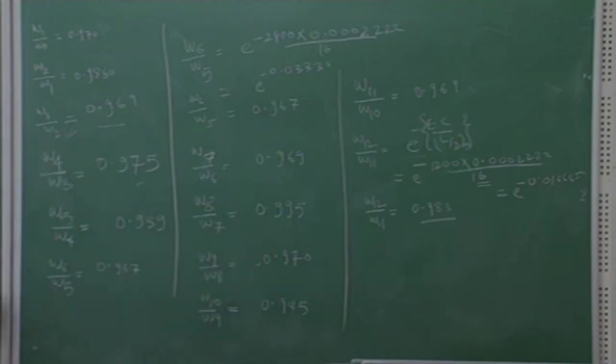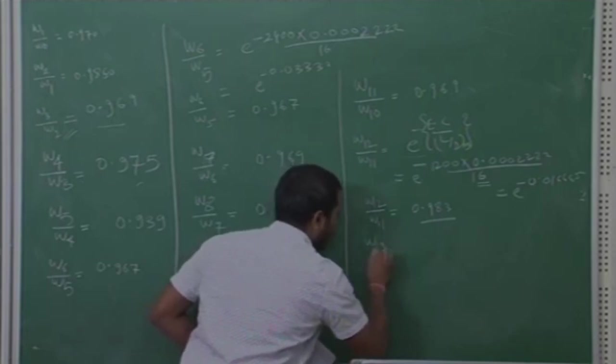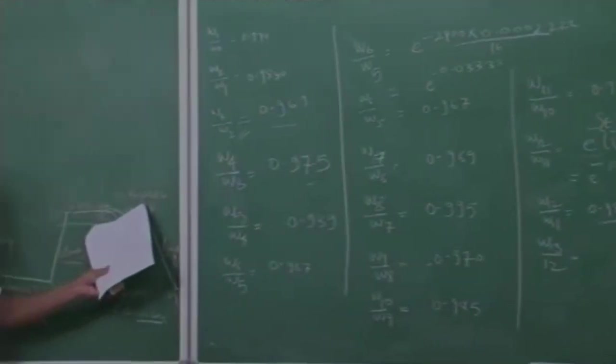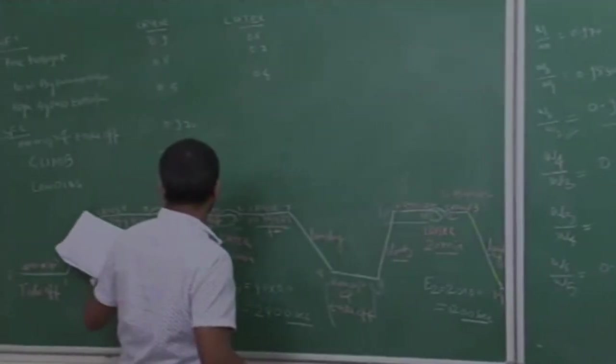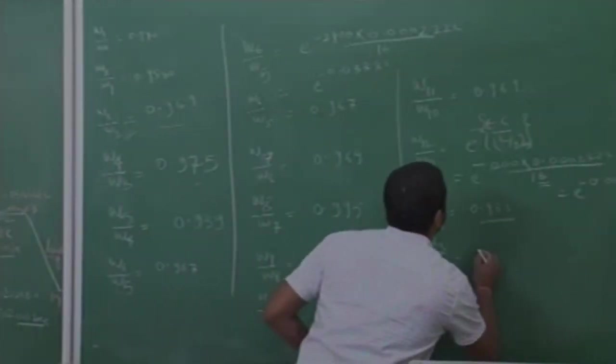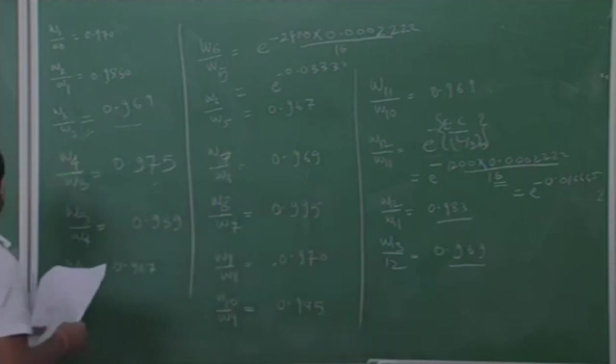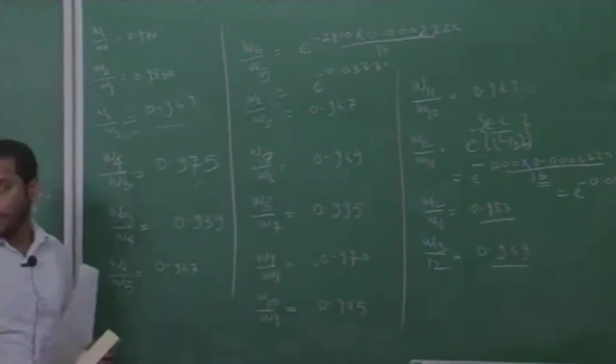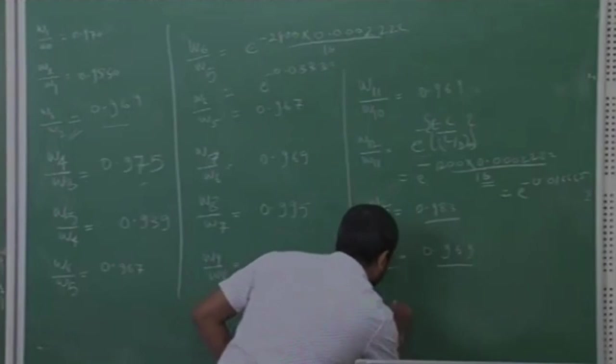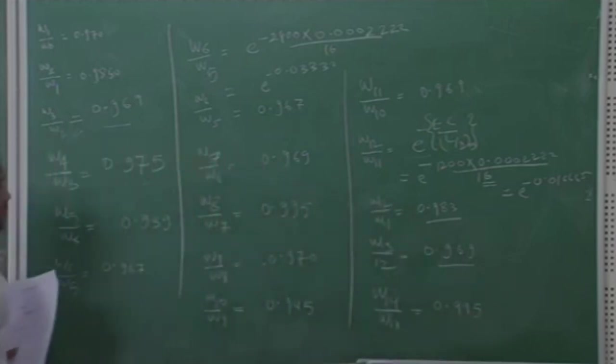Again for point 12 to 13, W13 by W12, again range is same as you see, 103,543 is equals to this path value and this path value also, so weight fraction will be also same. It will be 0.969 and again use the historical data. Here historical data is for landing 0.995, so W14 divided by W13, 0.995.